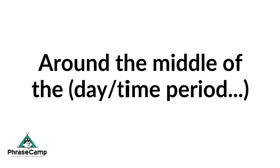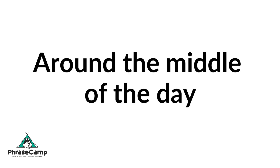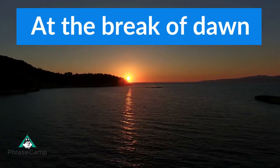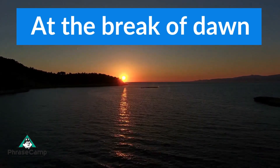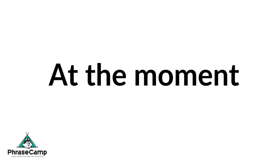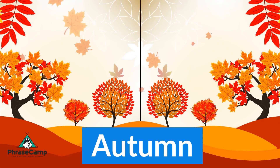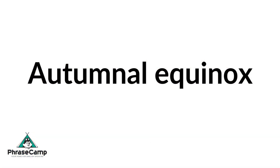Around the middle of the — you can add day, time period, etc. For example, around the middle of the day, or around the middle of the afternoon. At the break of dawn. At the moment. Autumn. Autumnal equinox — it could also be pronounced as autumnal equinox.